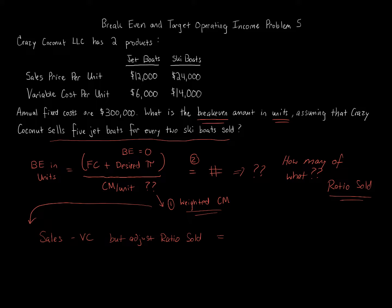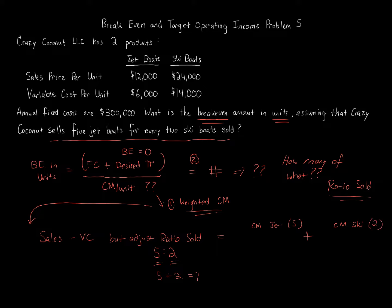We'll calculate the contribution margin for the jet boat, weight it using the ratio sold, then calculate the contribution margin for the ski boat and add the two together. Then we divide by the total number in the ratio. With a five-to-two ratio, five plus two equals seven. So we multiply the jet boat contribution margin by five, multiply the ski boat contribution margin by two, then divide everything by seven to get the weighted contribution margin per unit.